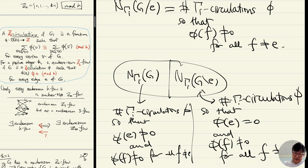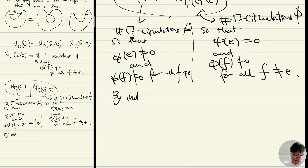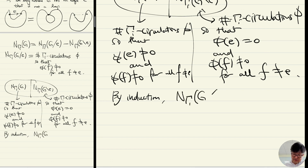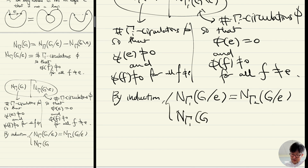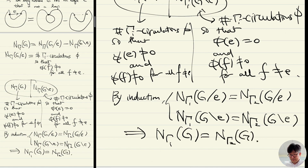By induction, the number of nowhere-zero Gamma_1 flows of G/e equals the number of nowhere-zero Gamma_2 flows of G/e, and similarly for G-e. This implies that the number of nowhere-zero Gamma_1 flows of G equals the number of nowhere-zero Gamma_2 flows of G. So that's the proof.